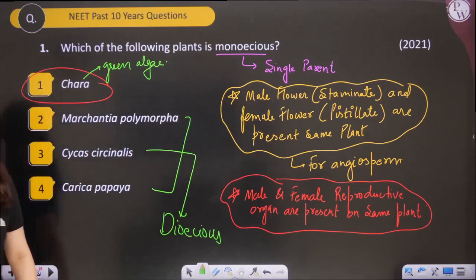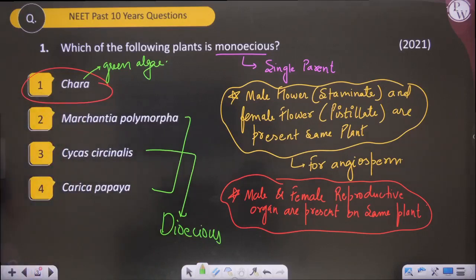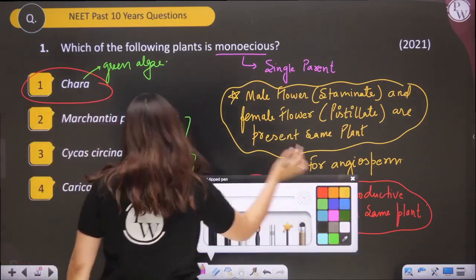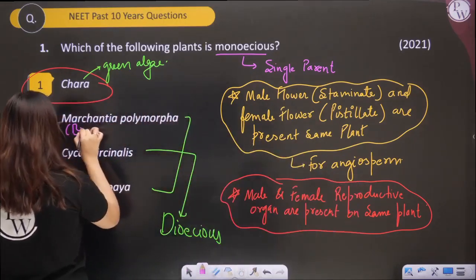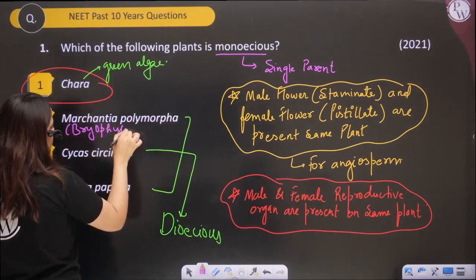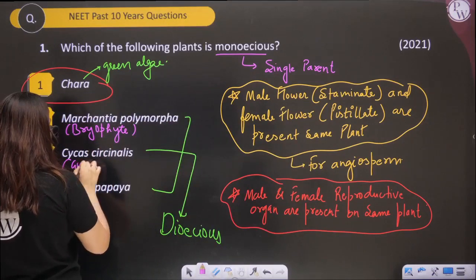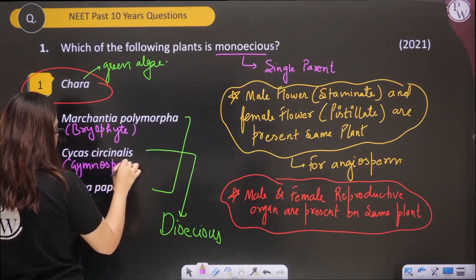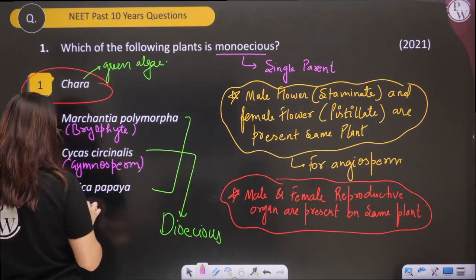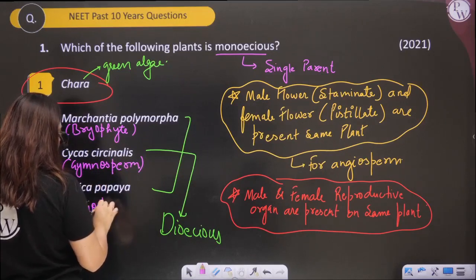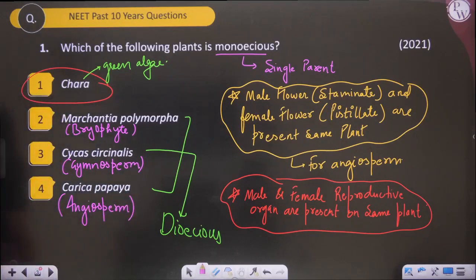Dioecious means two parents — the male organ is present on the male parent and the female organ on the female parent. Marchantia is a bryophyte, Cycas is a gymnosperm, and Carica papaya is an angiosperm. So the answer is Chara — Chara is monoecious. I hope this is clear; it's a very direct, very easy question.